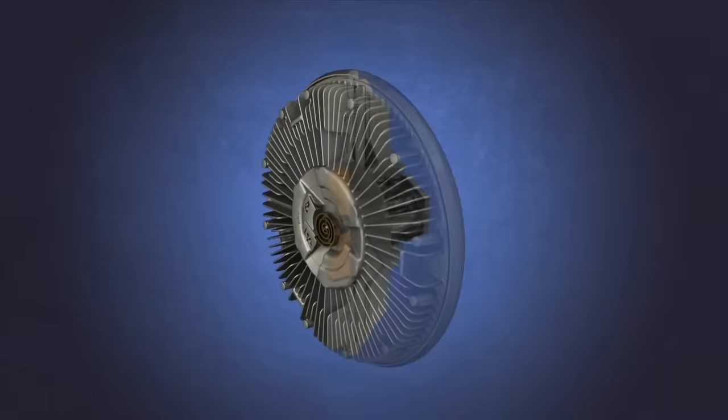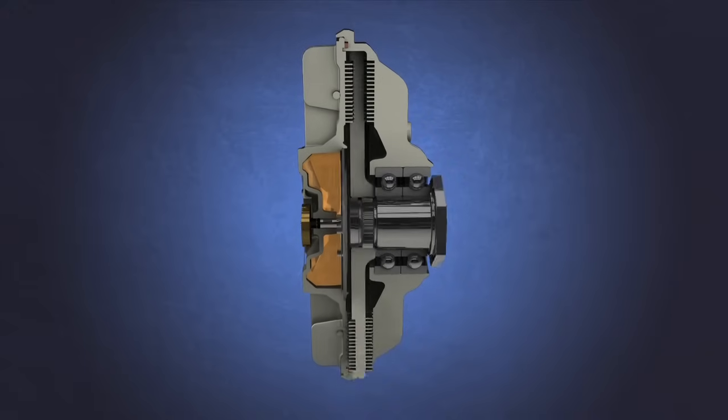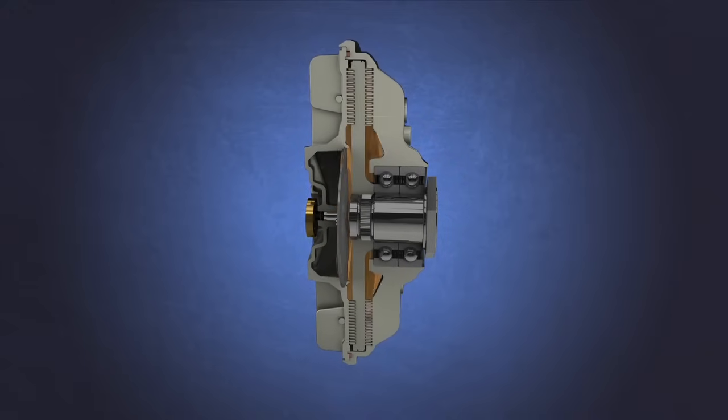An air-sensing viscous fan clutch replaces the spring, air, and friction combination with shear plates and viscous fluid to drive the two halves.